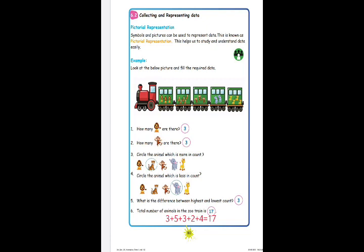Fifth question: what is the difference between the highest and lowest count? Difference means you subtract. Among all animals, tiger is highest with five, and elephant is lowest with two. Five minus two gives three — the answer is three. Sixth question: total number of animals in the zoo train. Three lions plus five tigers plus three monkeys plus two elephants plus four giraffes gives a total of 17 animals.